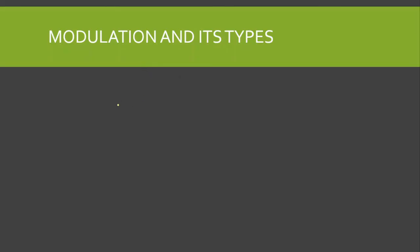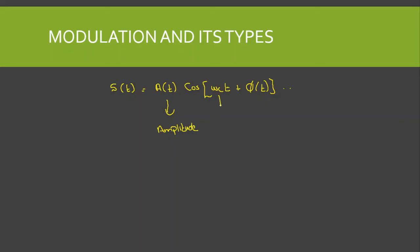To understand the types of modulation, consider a sinusoidal carrier signal s(t) = A(t)·cos(ωct + φ(t)). Looking at this expression, we have three variables: the amplitude, the frequency, and the phase. The message signal can be used to modulate any of these three parameters to allow the carrier signal to carry information from transmitter to receiver.